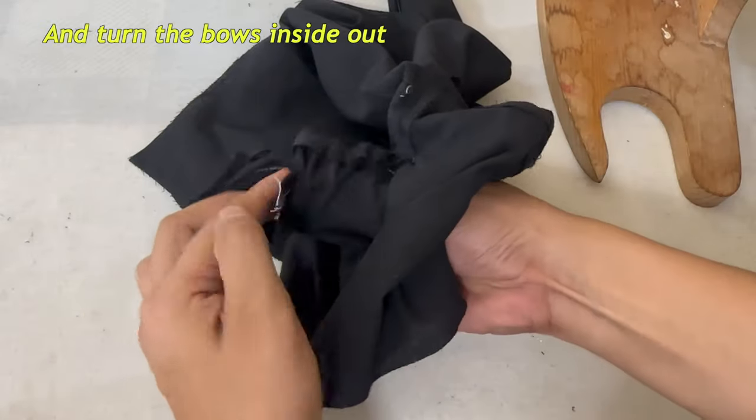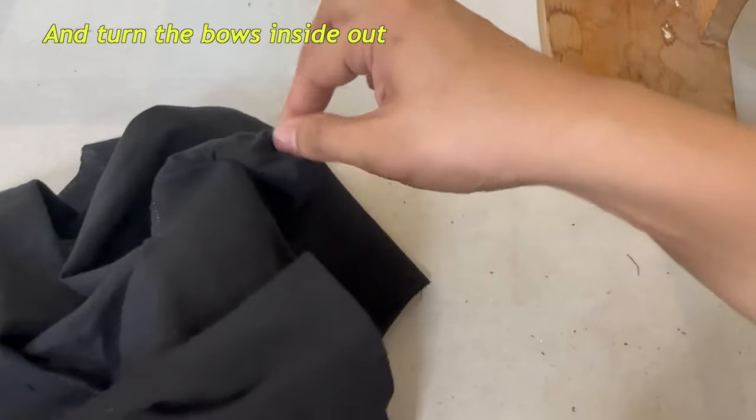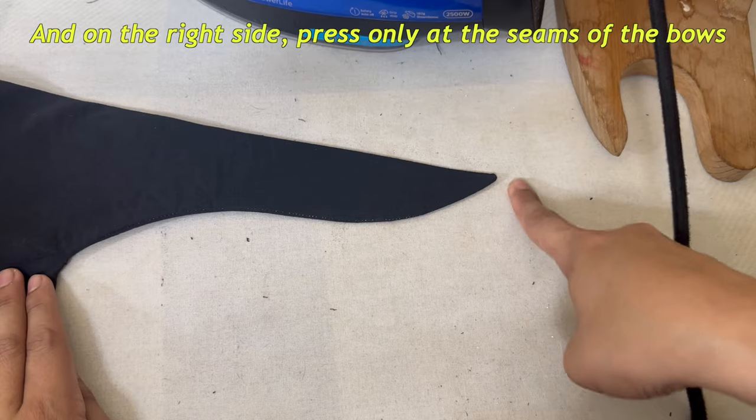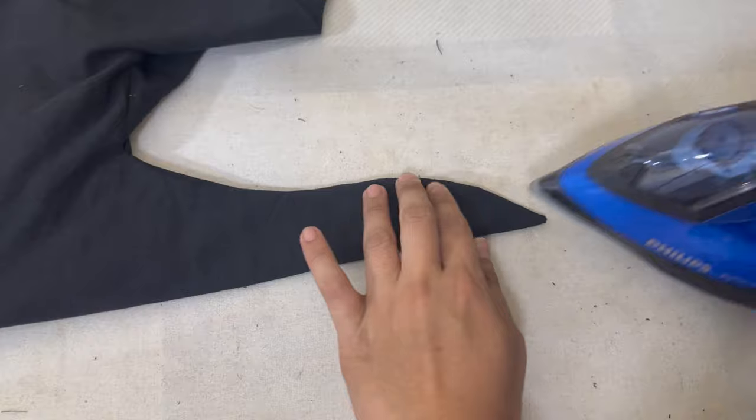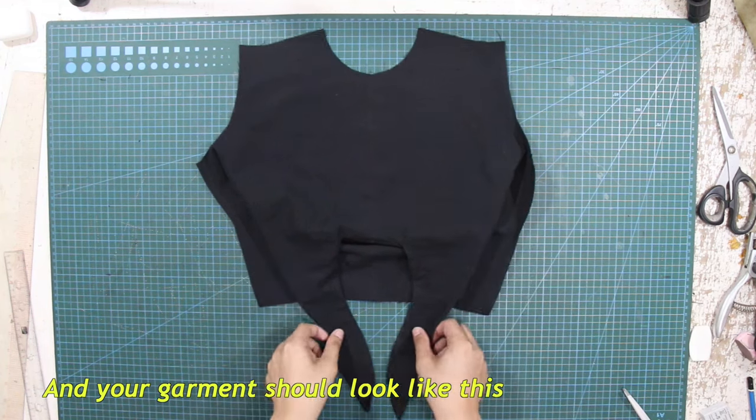Next, turn the bows inside out. And on the right side, press only at the seams of the bows to lay it flat. And your garment should look like this.